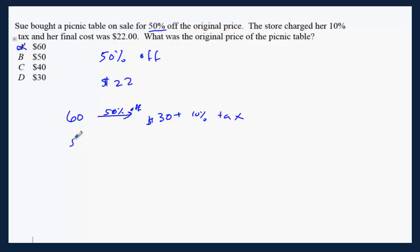If the original price is $50, if you take 50% off, that's going to be $25 plus tax. That's going to be greater than $22. That's not going to work.